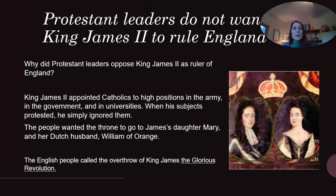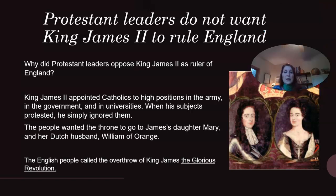Protestant leaders did not want King James II to rule England. Why did Protestant leaders oppose him? King James II appointed Catholics to high positions in the army, in the government, and in universities. When his subjects protested, he simply ignored them. The people wanted the throne to go to James's daughter Mary and her Dutch husband, William of Orange.